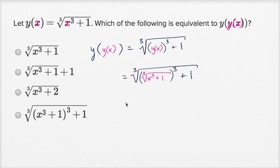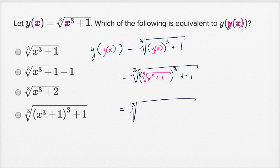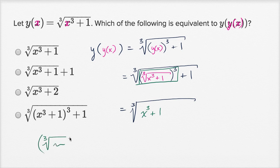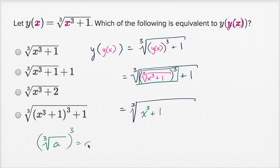So what is this going to be? Well, this is going to be the cube root of — what we have right over here — if I take the cube root of something and then raise it to the third power, this is like raising something to the one-third and then raising that to the third, which is just going to give me x to the third plus one. If I take the cube root of a and raise it to the third power, that's just going to be a. The cube root of x to the third plus one, to the third power, is just x to the third plus one.